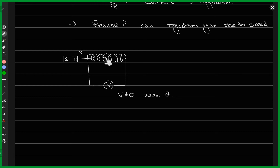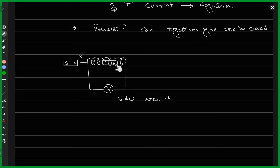Now, if I bring the magnet inside the coil and it is stationary, its velocity is zero, and you again observe a zero voltmeter reading — no current being produced. But if you move it out with some velocity, you observe current again on the voltmeter. But this time the needle goes in the opposite direction, so the voltage is negative — a non-zero but negative value when you move the magnet outside.